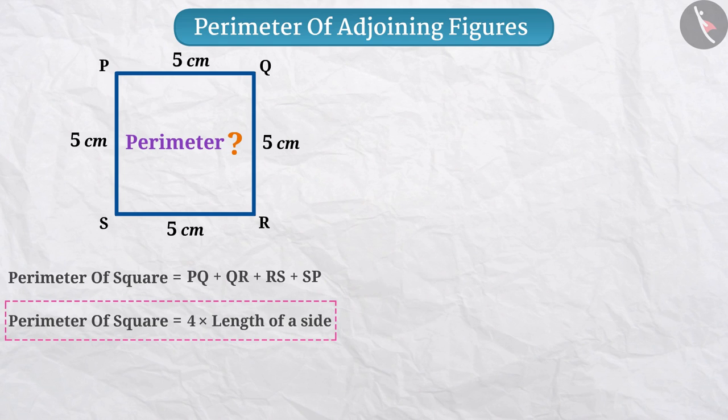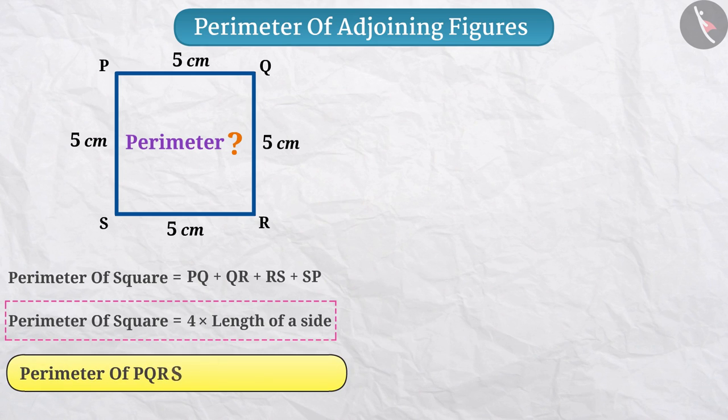If you know the length of the side of a square, then by using this formula, you can find the perimeter of that square. In this way, the perimeter of square PQRS will be 4 multiplied by 5 cm is equal to 20 cm.